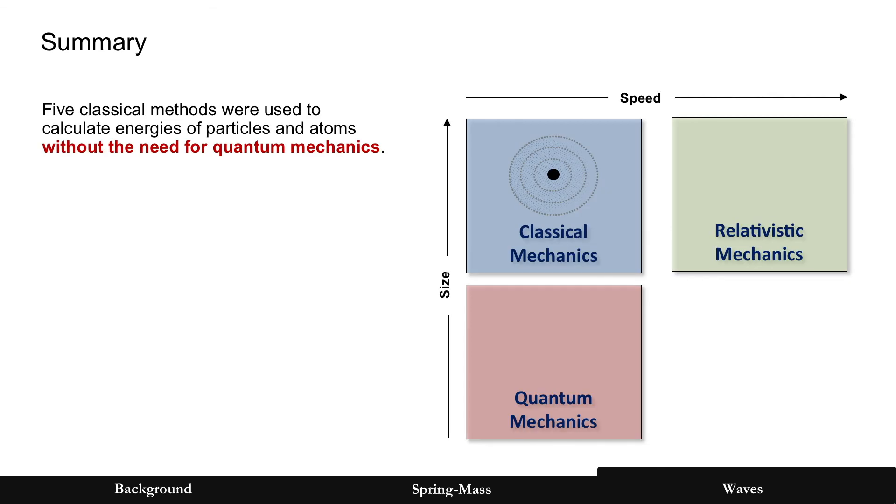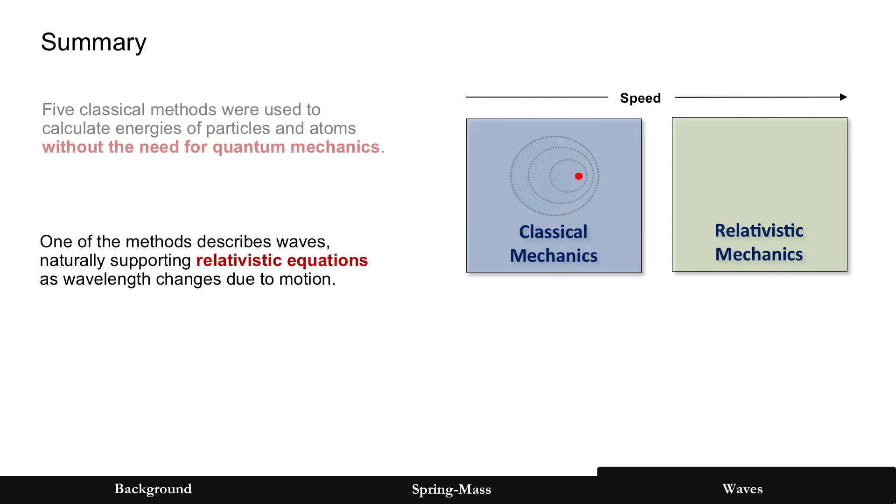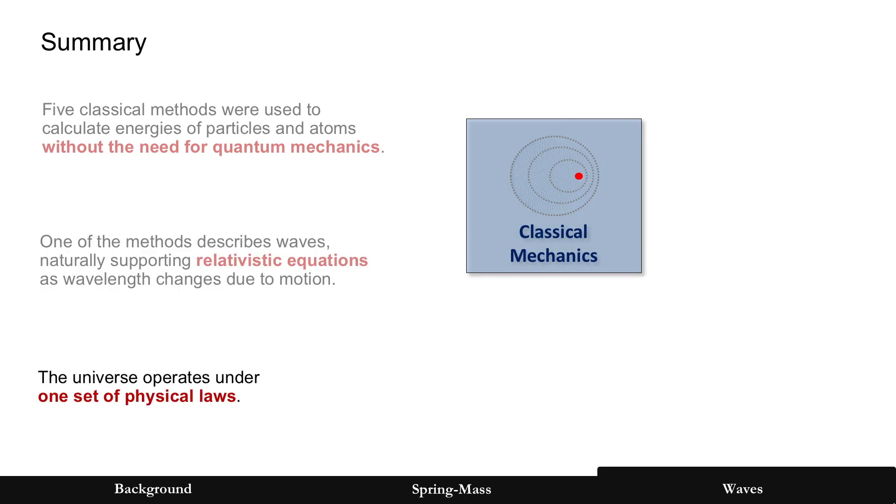So let's just summarize. Five different methods were used to calculate energies of both particles and atoms without the need for quantum mechanics. And one of the methods described waves, which naturally supports relativistic equations as wavelength changes due to motion. So we get rid of that one, and we collapse everything to classical mechanics, and that the universe, if we were to conclude anything, hopefully operates under only one set of physical laws.